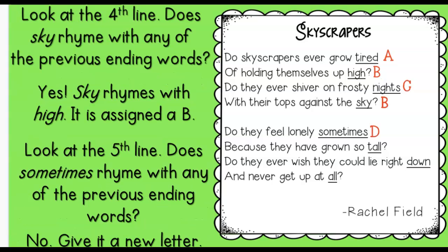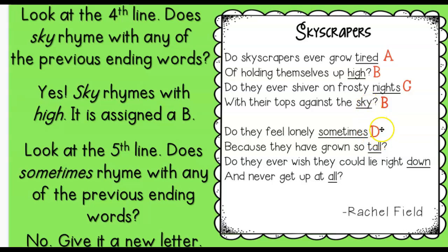We're going to look at that fourth line now. Tired is A, high is B, nights is C — sky. Does it rhyme with tired? No. Does it rhyme with high? It does. Sky and high. So we're going to put a B there. Let's look at the second stanza. Does sometimes rhyme with tired? Nope. How about sometimes and high? Nope. Sometimes and nights? Nope. Sometimes and sky? Nope. So we need to do a new letter, D. You just start with A and work right up the alphabet.